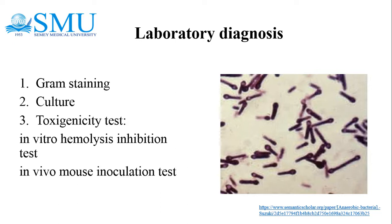In the in vivo mouse inoculation test, Robertson's cooked meat broth with black turbid growth is injected into the root of the tail of a test mouse. The animal develops stiffness beginning with the tail, progressing to the hind limbs on the inoculated side, then the other limb, trunk, and forelimbs within two days. This test indicates production of tetanospasmin.